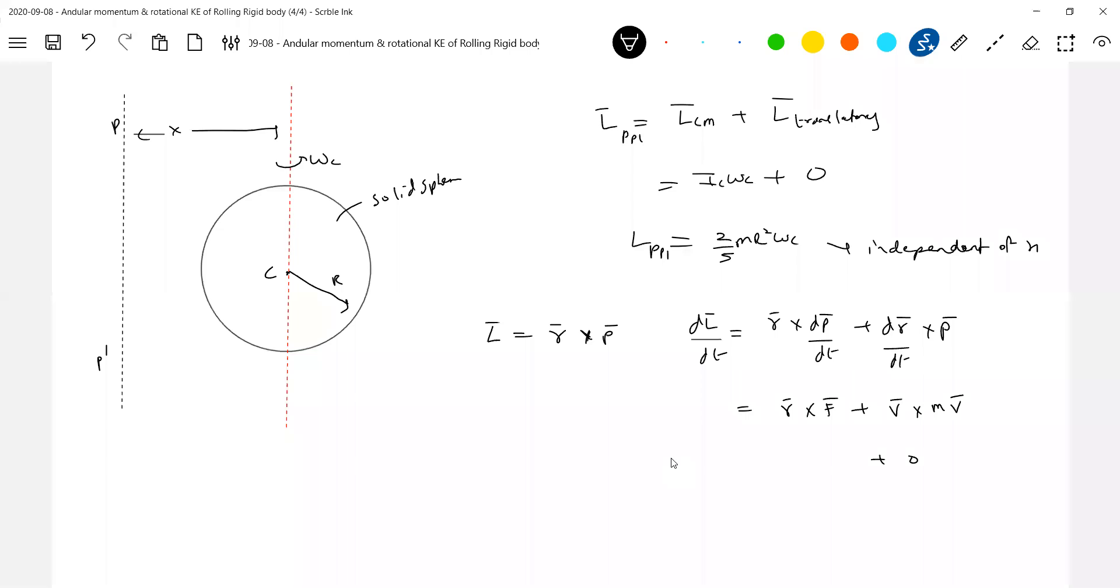What can be this right hand side? Should be zero. Because V bar cross M is a constant. V bar cross V bar should be zero. So finally what we are getting is this R bar cross F bar will become external torque.